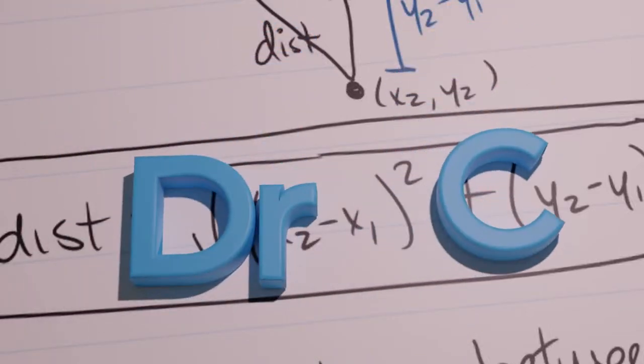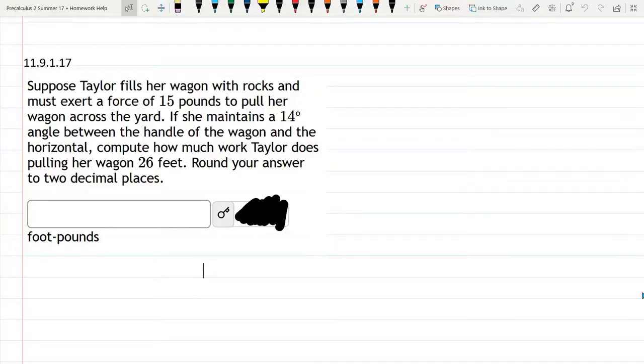So in this problem, Taylor is pulling her wagon, and it doesn't say flat ground, but there's no hill described here, so it's going to be on flat ground. Let's choose a reasonable marker. Alright, so there's the ground, and the wagon is here.